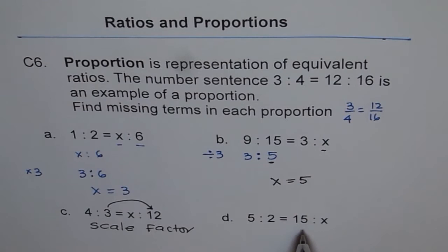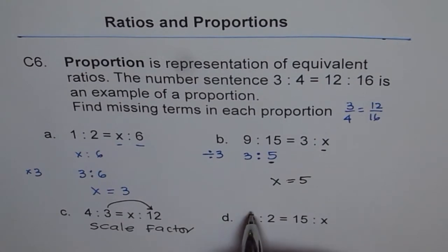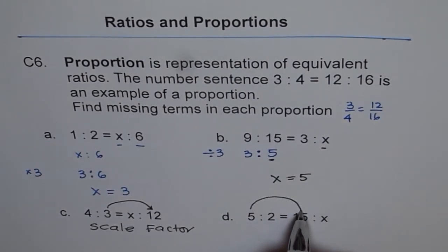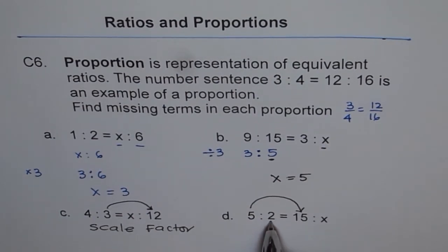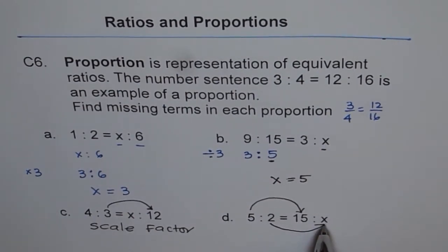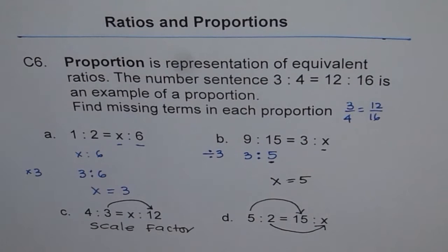Now in this case, 5 is to 2 equals to 15 is to x. So the scale factor you should find by multiplying 5 with the number to get 15, and with the same number, multiply 2 and get x. That is how we do such questions.